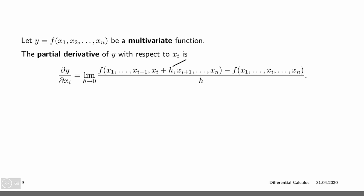The partial derivative is given by treating all parameters except xi as constant. We fix all the x's at their current value and make an infinitesimally small change h only at xi. It's the limit as h goes to 0 of f of x1 through x_(i-1), xi plus h, x_(i+1) through xn, minus f of x at the same point, divided by h.